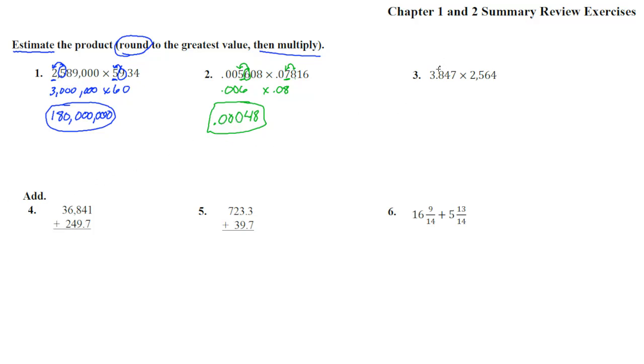Number 3. 3.847, that's 4, times 2,564, that's 3,000. So it's 4 times 3,000, and 4 times 3 is 12, with 3 zeros - 12,000. Oh my goodness, every single one of these roundings was a rounding up. There's the 5, and the 9, and the 6, and the 8, and the 8, and the 5 - all rounding up. That was surprising.